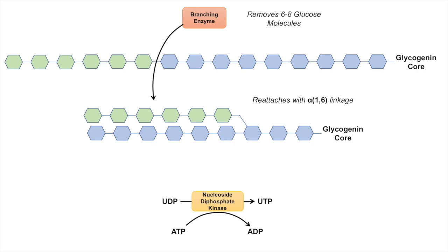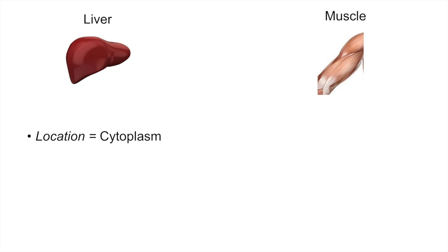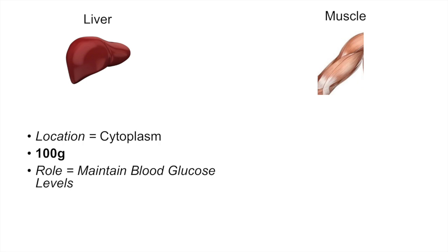We've talked about the synthesis of glycogen, but where does it actually occur and where is it stored? The two major sites of storage in our body for glycogen are the liver and the muscle. In the liver, glycogen is stored in the cytoplasm of hepatocytes and weighs about 100 grams. The role of glycogen in the liver is to maintain blood glucose levels — that's its main role when stored and used in the liver.